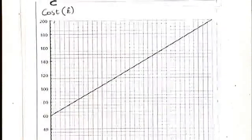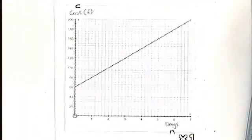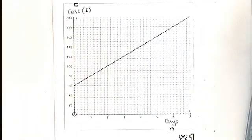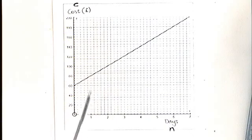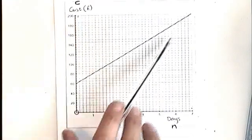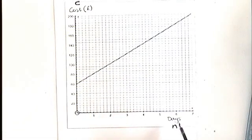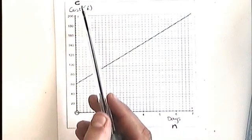So this is a question that's quite common in GCSE exams. They ask you to work out the equation of a line based upon a particular context. I want you to imagine that this is a hire company who are hiring out vans. The cost of the hire is given by this graph. If you look along the bottom, I've labelled it with days and the letter N, and the cost is labelled with the letter C.